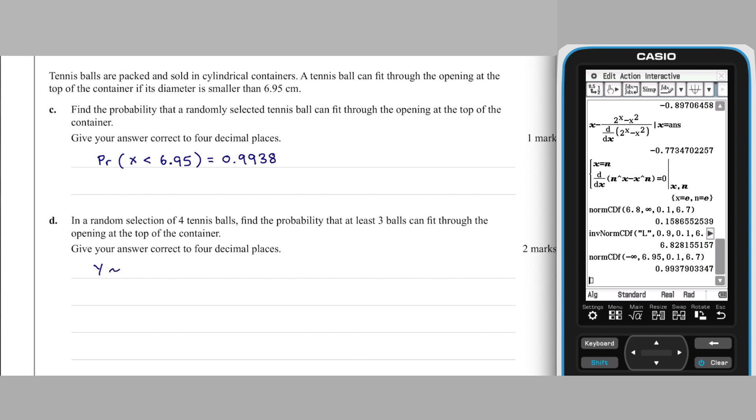Part D describes a binomial distribution where N equals 4 tennis balls are chosen and the probability of success, fitting into the can, of only one of them is 0.9938, the probability found in Part C. As this question is worth two marks, it is important to show some working before proceeding to calculate the probability required. In this case, writing down the distribution you are calculating with is suitable working.